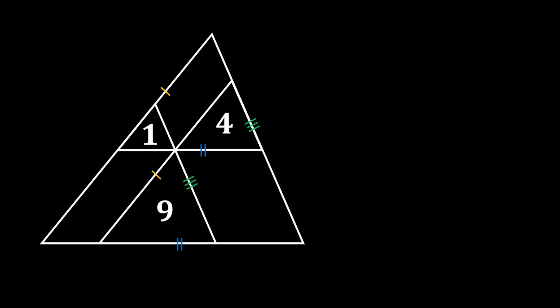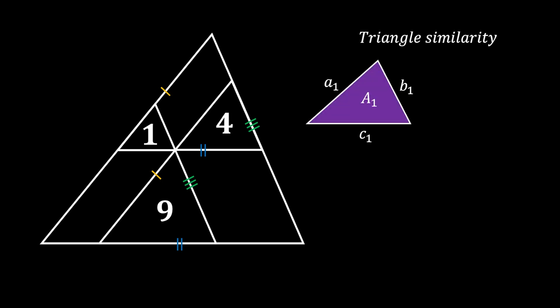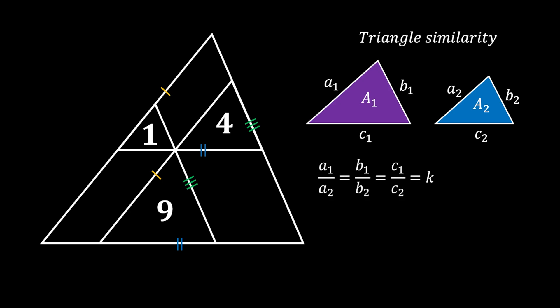Now let's remind ourselves about one really interesting property of triangle similarity. Let's say that we have a triangle with area A₁ and label its sides. Then let's say that we have another triangle with area A₂ which is similar to our first triangle. From triangle similarity, we know that the relation between the corresponding sides of those two triangles must be the same.